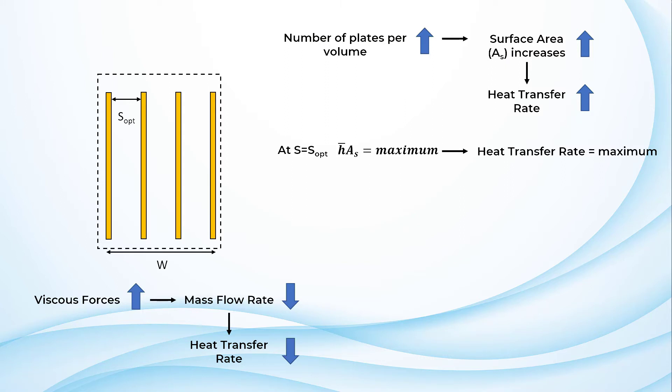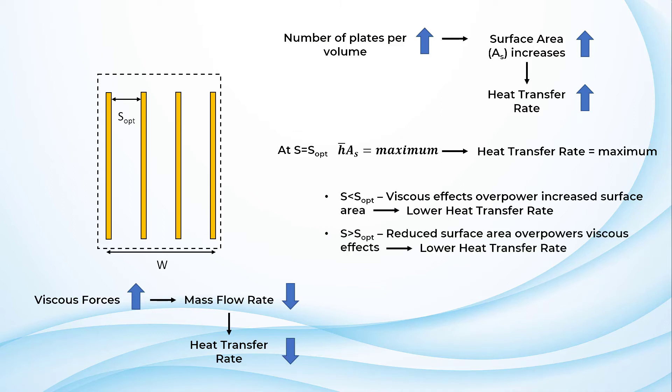For values of S less than SOPT, the reduction in heat transfer due to viscous effects overpowers the increase of heat transfer surface area. And on the other hand, for S greater than SOPT, the decrease in the number of plates per specific volume reduces the heat transfer surface area overpowering the increase in heat transfer levels due to reduced viscous effects.